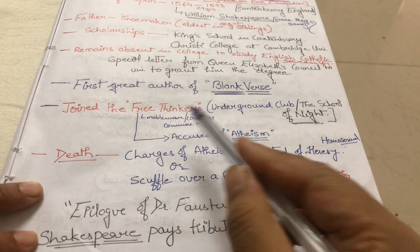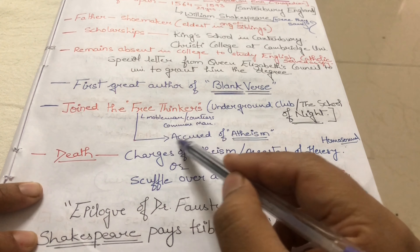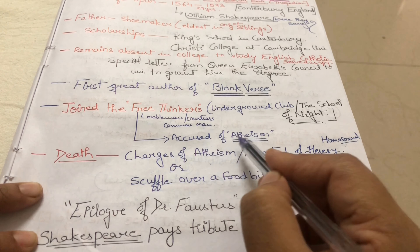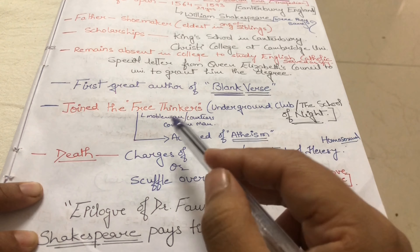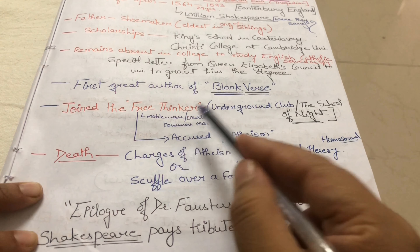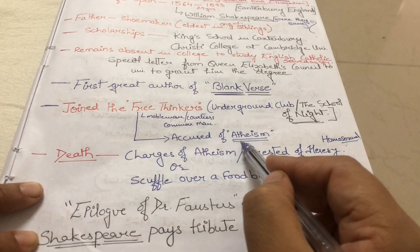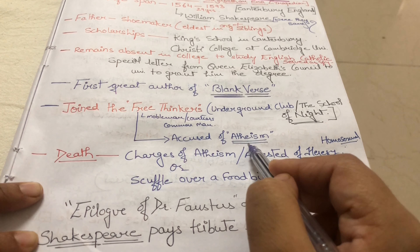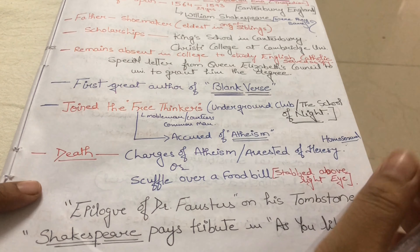The free thinkers group was accused of atheism — the whole group did not believe in God, which was also the case with P.B. Shelley. So these were some reasons associated with Marlowe's death.